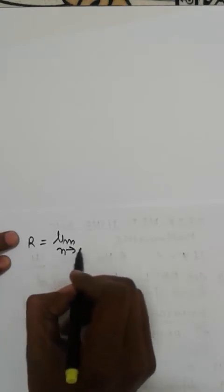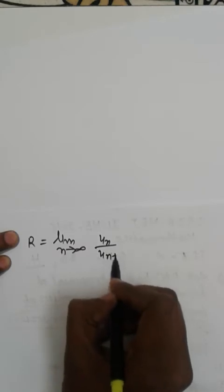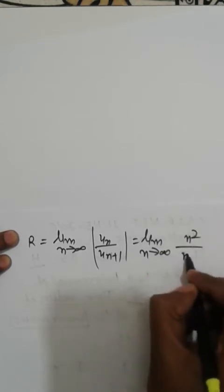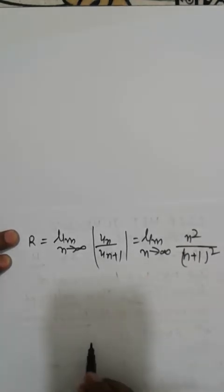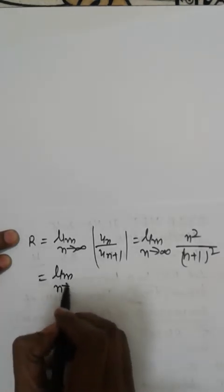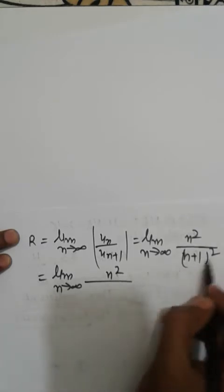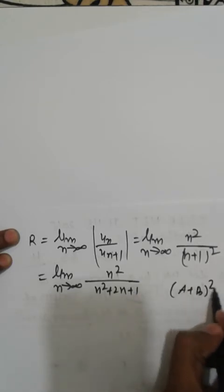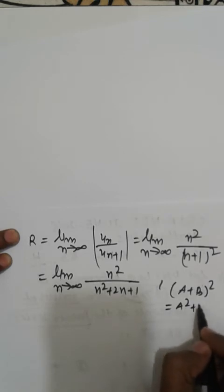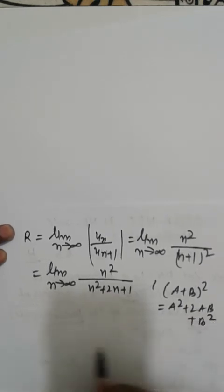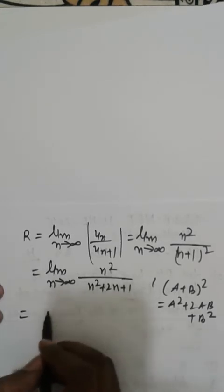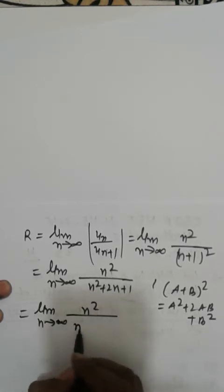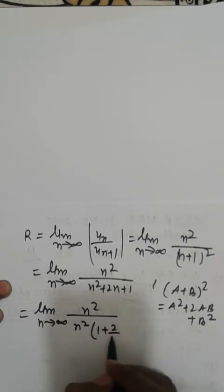This is the limit as n tends to infinity of n² divided by (n+1)². Opening this up: n² divided by n² + 2n + 1, using the formula (a+b)² = a² + 2ab + b². Now take n² common in the denominator: limit as n tends to infinity of n² divided by n²(1 + 2/n + 1/n²). The n² cancels.